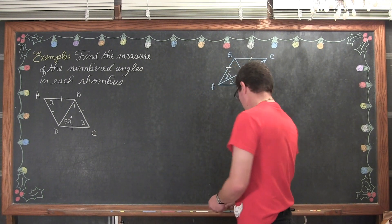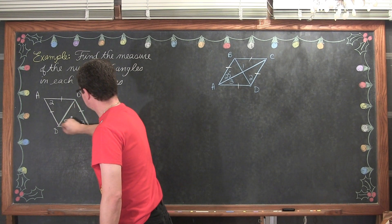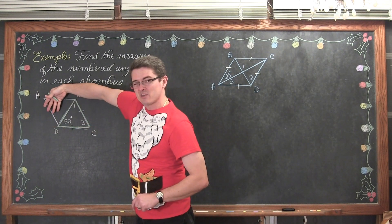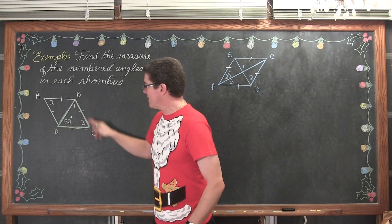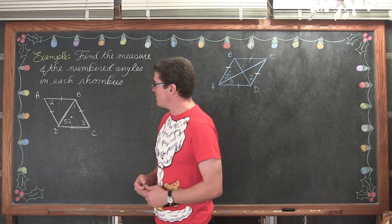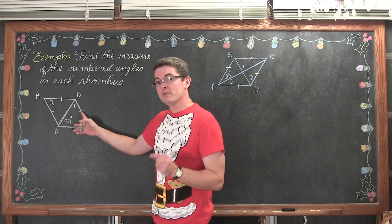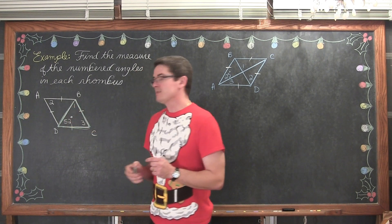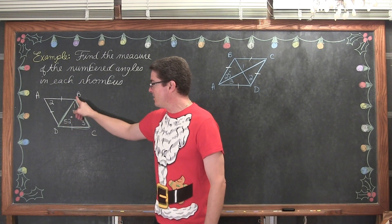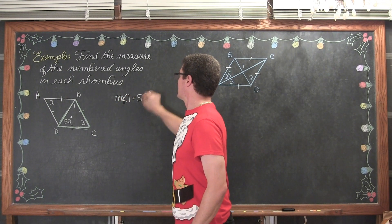To verify: if you highlight just a portion of the rhombus and look at this green triangle - triangle DBC - it has two equal sides, which means it is an isosceles triangle. Isosceles triangles have two equal legs, and the base angles opposite those congruent sides are going to be equal. So it is another validation that the measure of angle 1 is equal to 52 degrees, because these are base angles of an isosceles triangle.